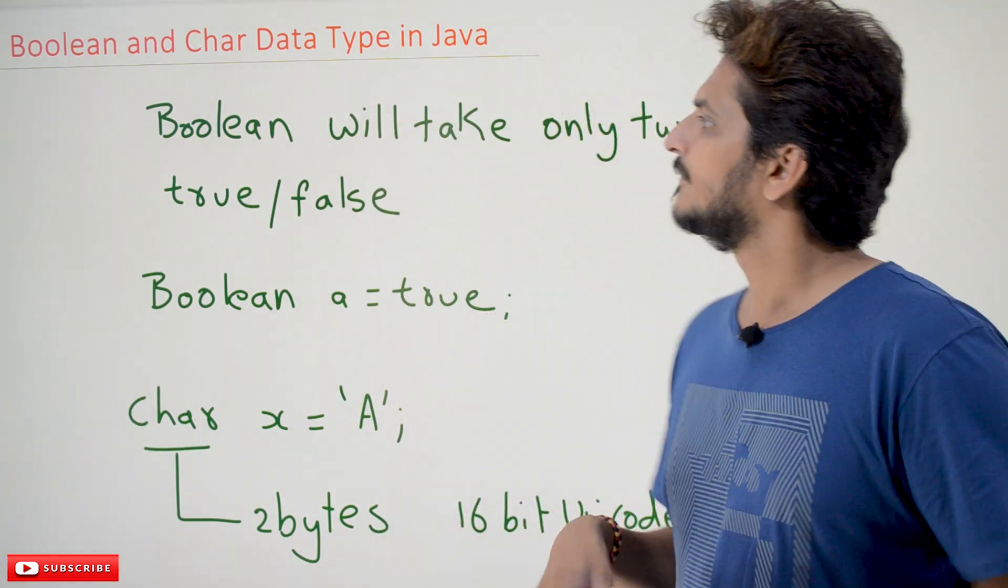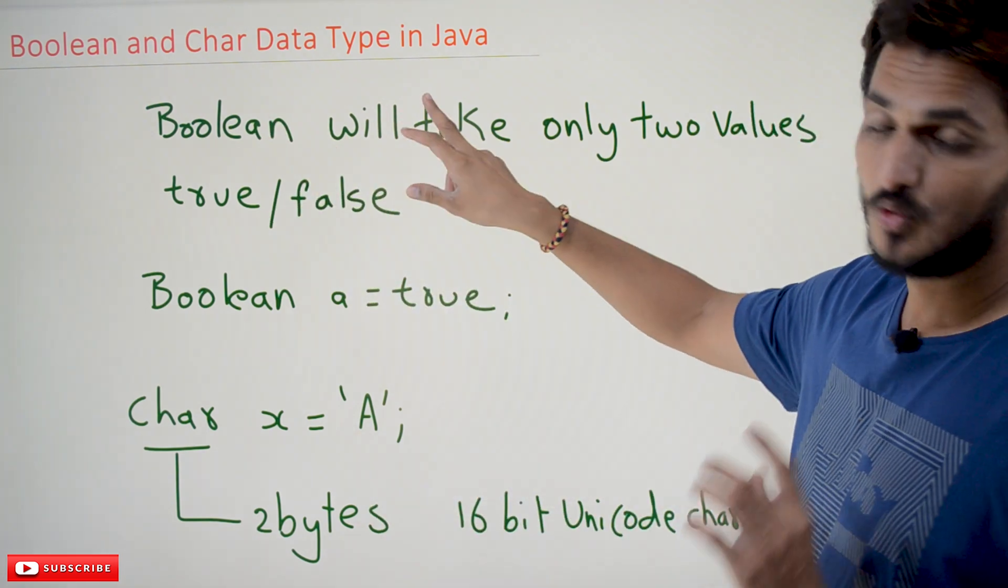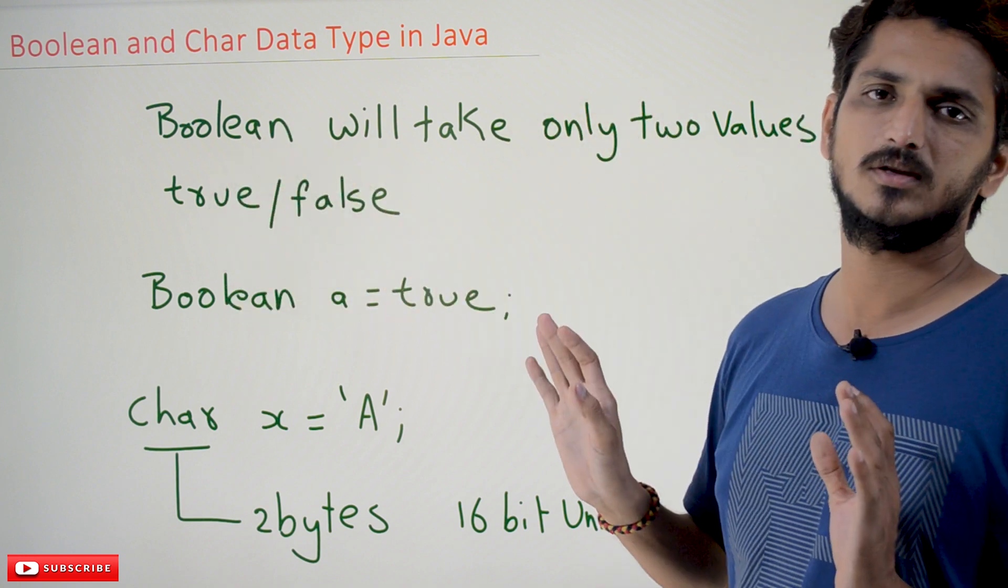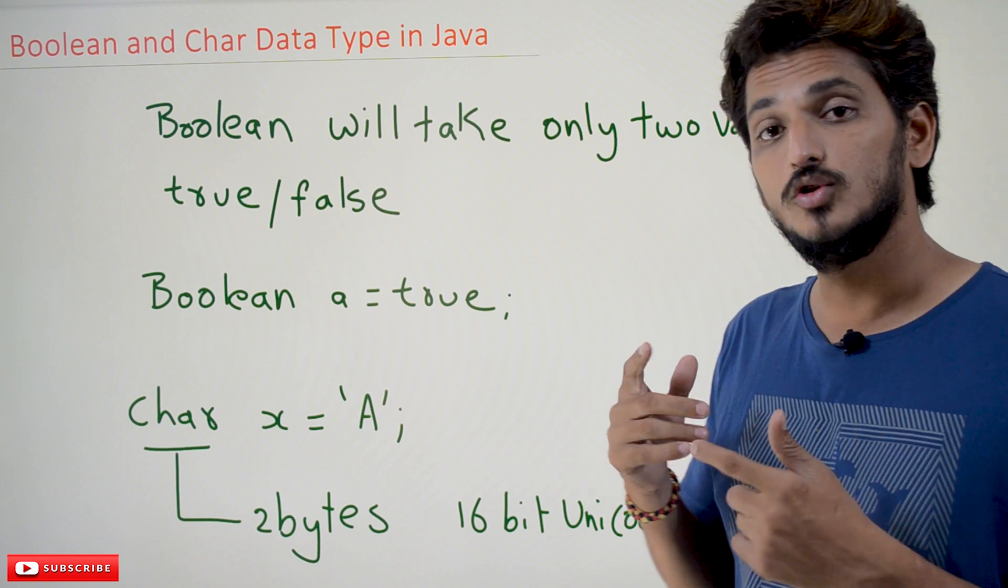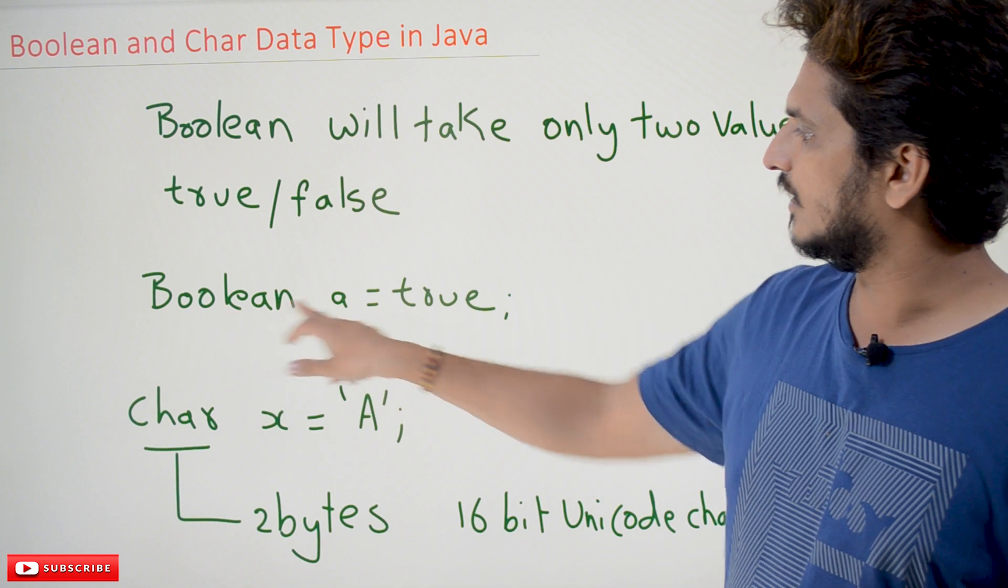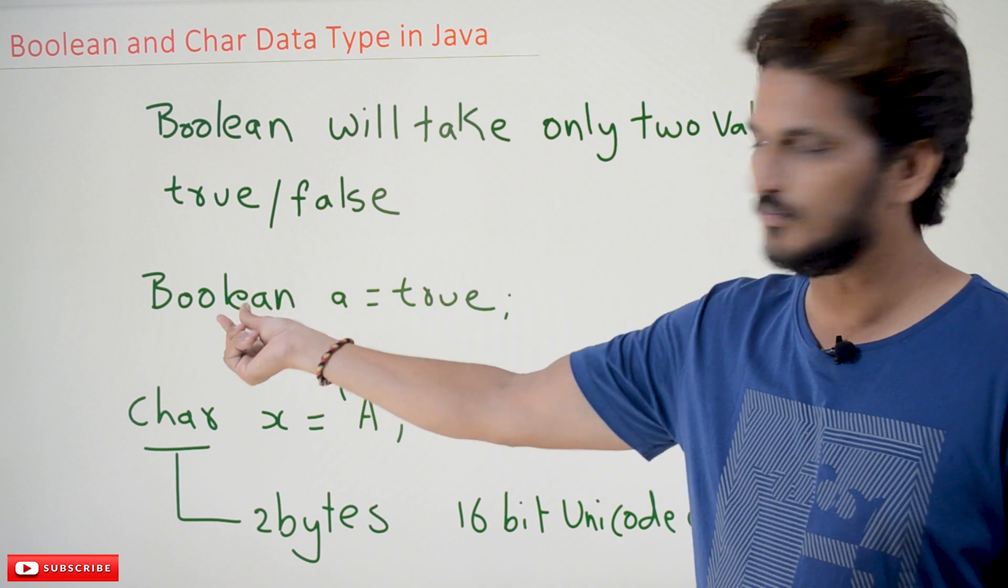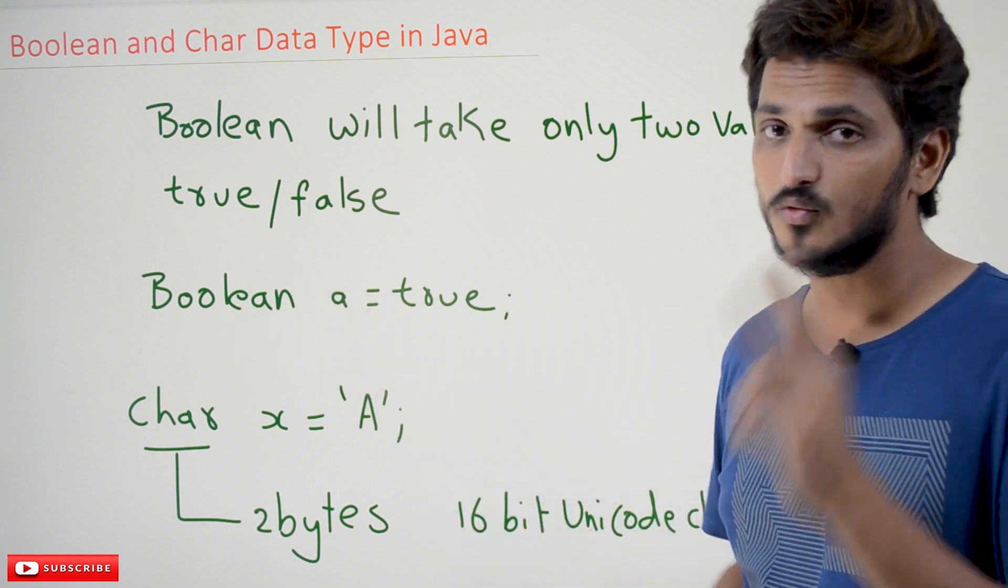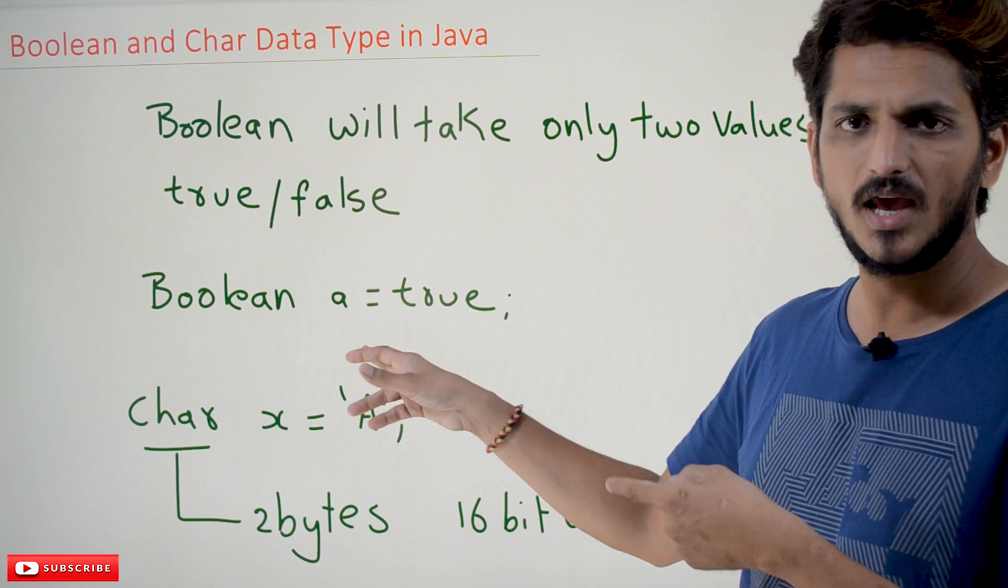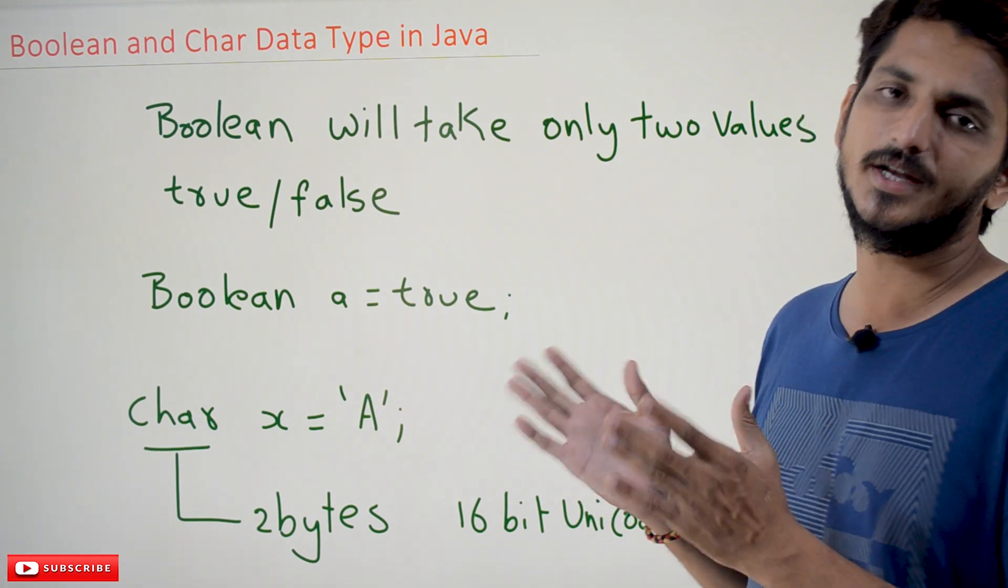Coming to today's class, Boolean data type is very simple to understand. Boolean data type takes only two values, either true or false. But this data type we are going to use multiple times during coding. So boolean a = true, that means a is a variable of type boolean. If you display a, it is going to display true value. So that is what Boolean data type means.